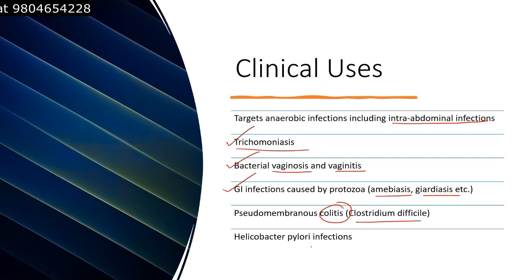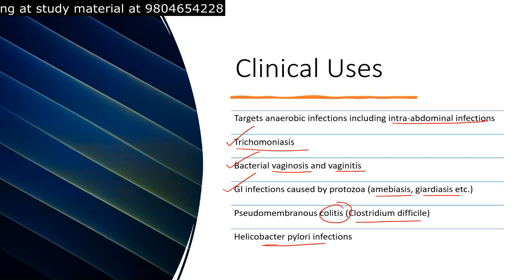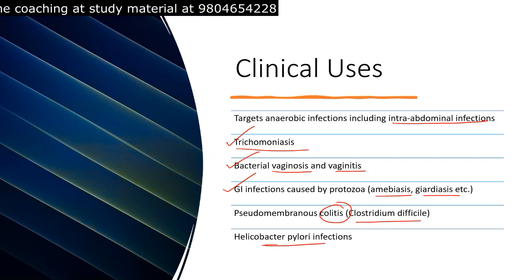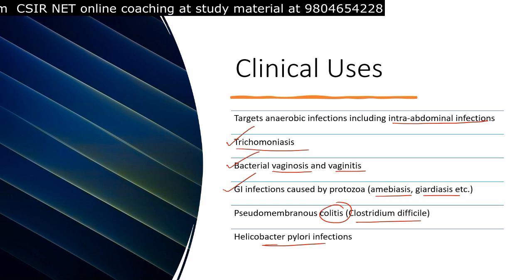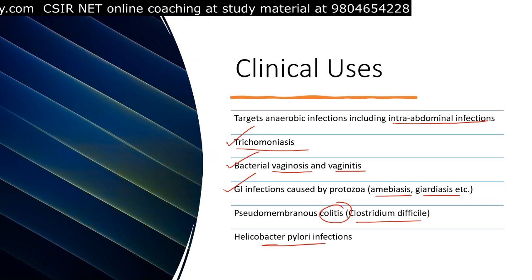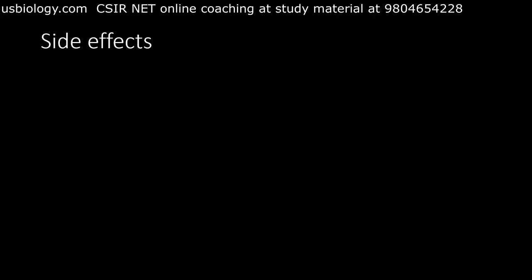Pseudomembranous colitis caused by Clostridium difficile is also targeted by metronidazole. Helicobacter pylori infections can be targeted as well, though not with metronidazole alone — it is used as combination therapy with other antibiotics. In complicated infections involving both aerobic and anaerobic bacteria, metronidazole is combined with other antibiotics.